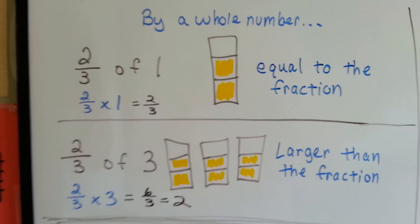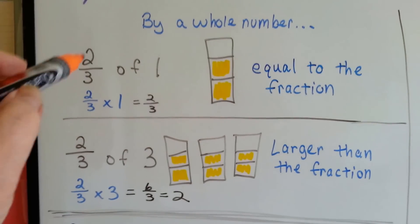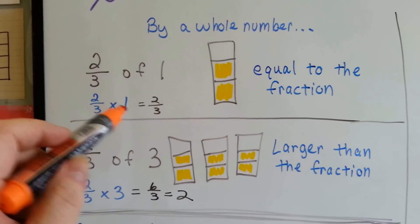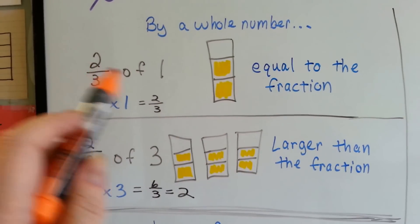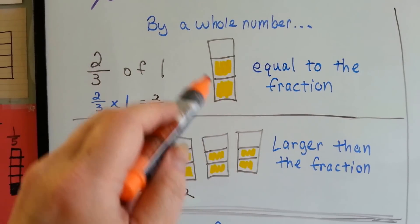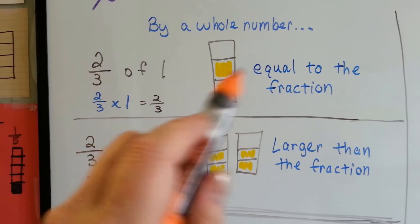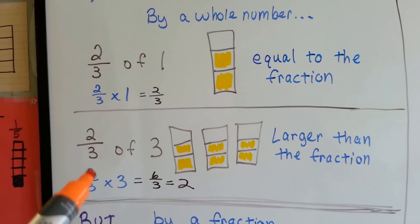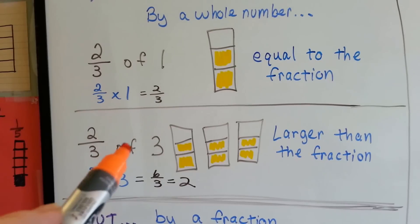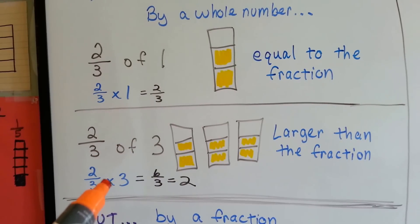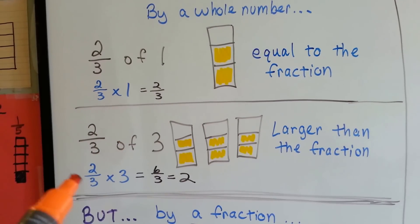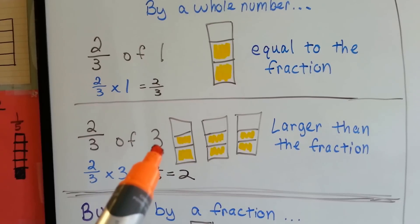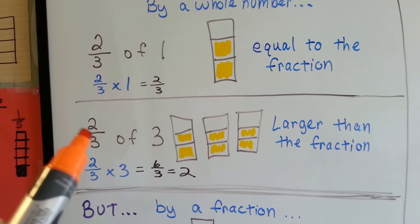If we multiply a fraction by a whole number, like two-thirds of 1 — which means two-thirds times 1 — it's going to be equal to two-thirds. Two-thirds of 1 is two-thirds, so now it's equal. If we do two-thirds of 3, which is two-thirds times 3, that's the same thing. Think of the multiplication sign as the word 'of.' Because we're using a whole number 3, it's going to be larger than the two-thirds.